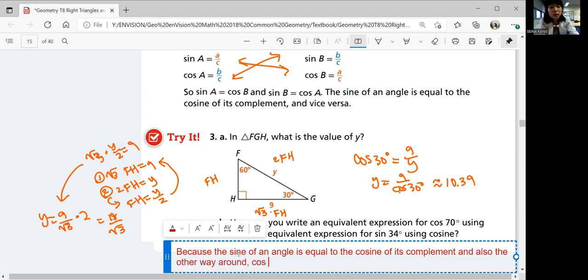Cosine 70 degrees would be equivalent to sine. What's the complement of 70 degrees? 20 degrees.